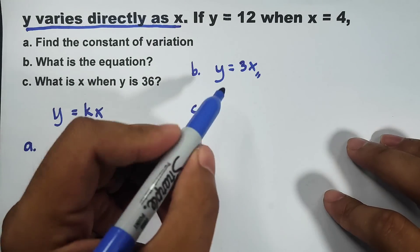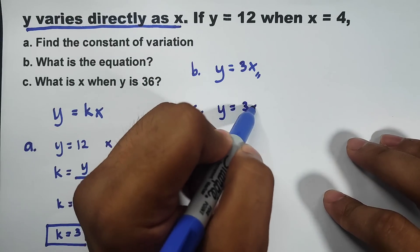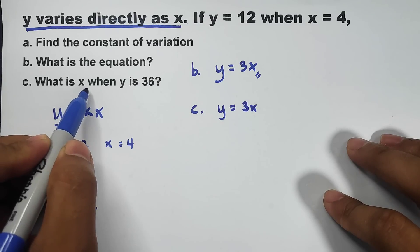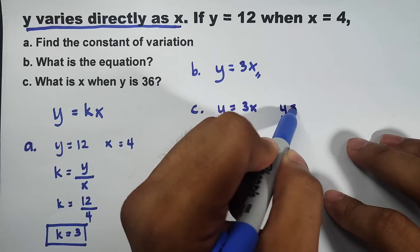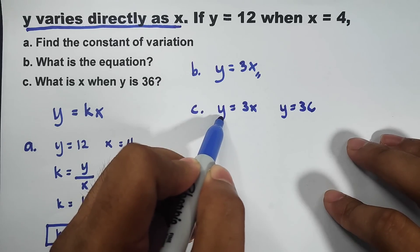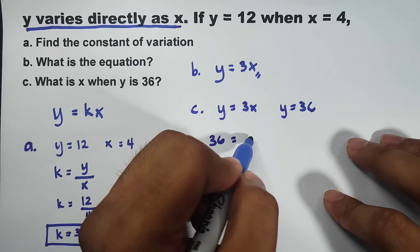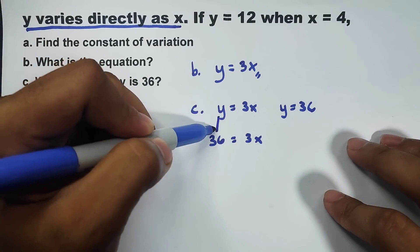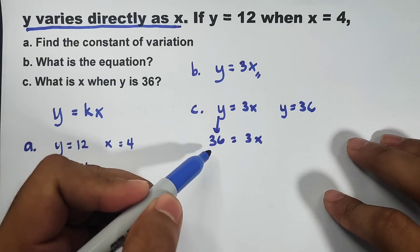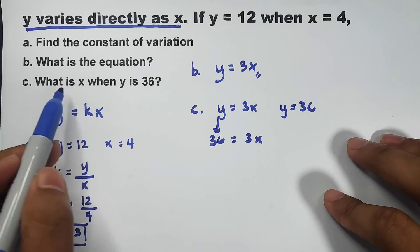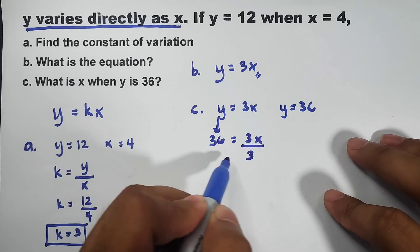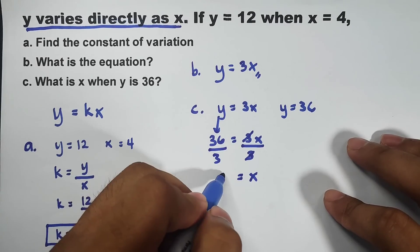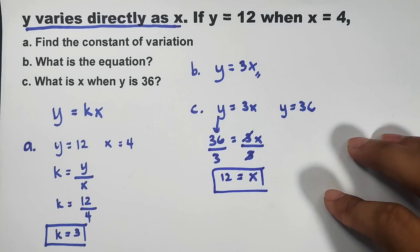To answer this, use y equals 3x. This is the equation of the variation. What is x when y equals 36? So, y equals 36. Replace the y with 36. So, this is 36 equals 3x. Let's solve it. We replace the variable y by 36. And to find the value of x, divide both sides by 3. Cancel, cancel. Your x equals 36 divided by 3, which equals 12. And this is the answer for letter C.